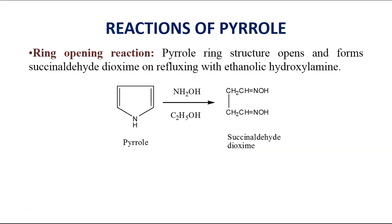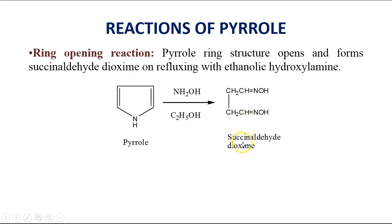Ring opening reaction: Pyrrole undergoes ring opening when refluxed with ethanolic hydroxylamine, and the ring is opened to form succinaldehyde dioxime. You can see here this 5-membered Pyrrole ring is getting opened, giving succinaldehyde dioxime — that is why it is called a ring opening reaction.